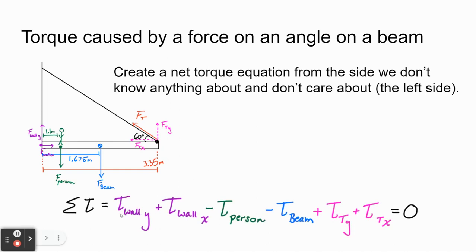I'll write all of that out as torques, not forces. I include all terms even though some will go away. So I have the torque from the wall in the y-direction, the torque from the wall in the x-direction, minus the torque from the person, minus the torque from the beam, plus the torque from tension in the y and x directions. I'm keeping colors consistent so it's easier to see where each number comes from. Torque is always force times distance, so I'll plug that in for each term.